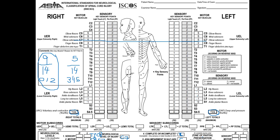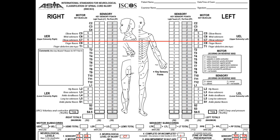Do we need to specify the zone of partial preservation here? It's actually NA for all four fields. Why? Because we have voluntary anal contraction, so we cannot specify the motor zone of partial preservation, and we have deep anal pressure, so we cannot specify the sensory zone. The answer is: incomplete, AIS C, zone of partial preservation NA.